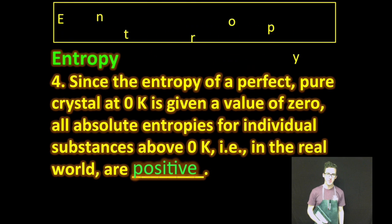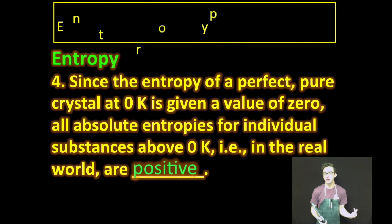Fourth thing to keep in mind. The entropy of a perfect pure crystal at zero Kelvin is given a value of zero. In other words, absolute zero, the theoretical coldest temperature you can get, all molecular motion stops, even the movement of electrons. So those perfect pure crystals are assigned entropies of zero. But zero Kelvin is theoretical. And therefore, in the real world, all individual substances above zero Kelvin will have positive entropy values.